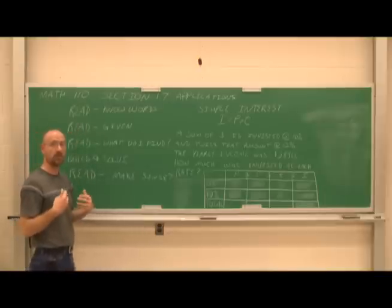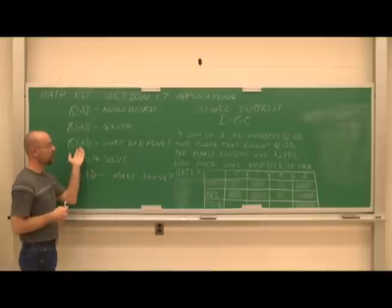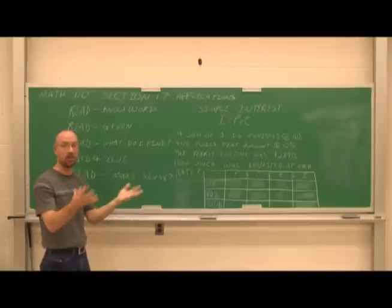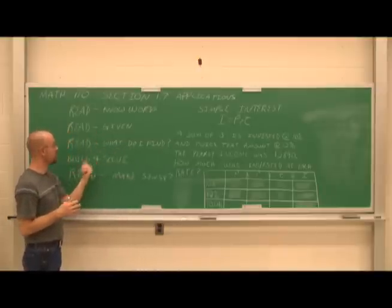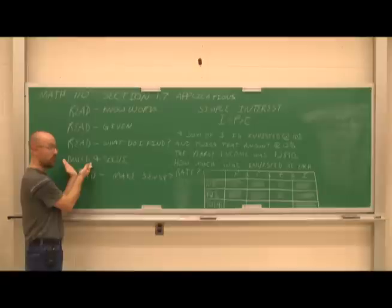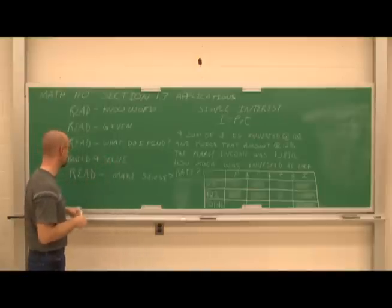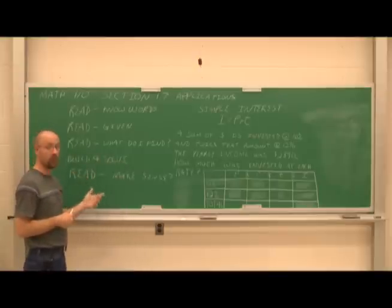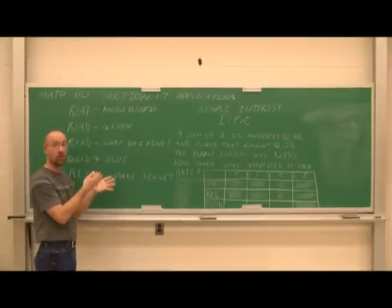The second time you read it, you ask yourself: what is the given information? What's useful that I can pull from this explanation? Then we read it a third time and ask: what do I need to find? What is this problem giving me as my variable — what am I going to assign an x to? Once we've done that and read it three times, now it's time to attempt to build the equation and solve it. This is probably the hardest part — to build a workable equation. Once we find a solution, we need to read the problem a fourth time to ask: does the solution make sense? Does it have the appropriate units? Does it answer the actual question that was asked?